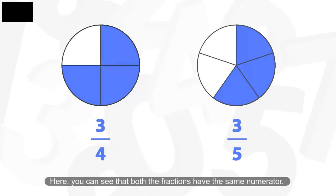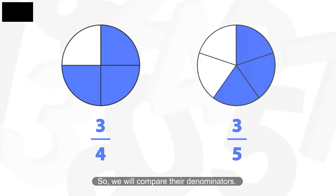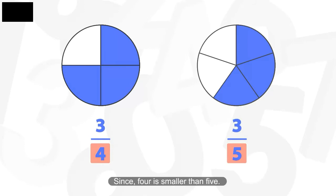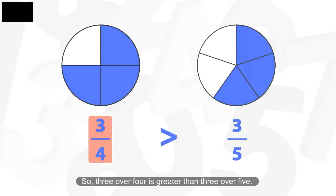Here, you can see that both the fractions have the same numerator. So we will compare their denominators. But in unlike fractions, fractions with the smaller denominator is greater. Since 4 is smaller than 5, so 3 over 4 is greater than 3 over 5.